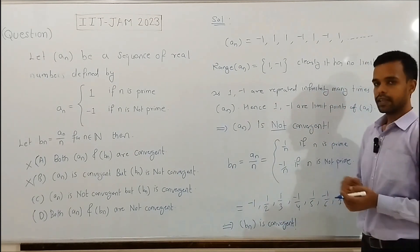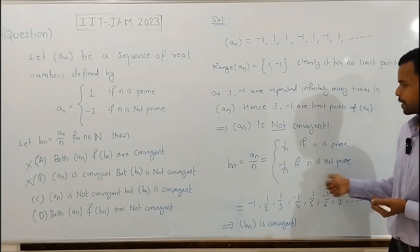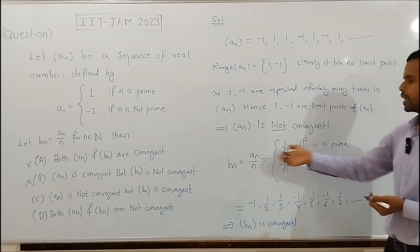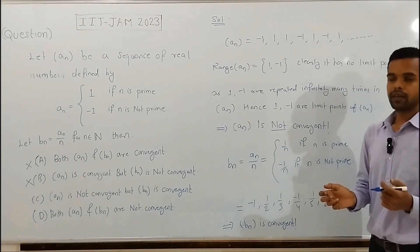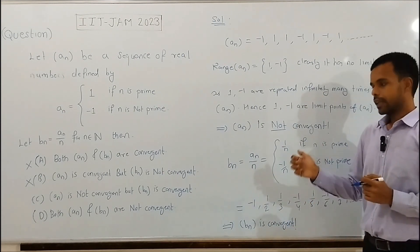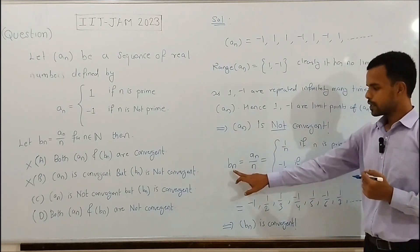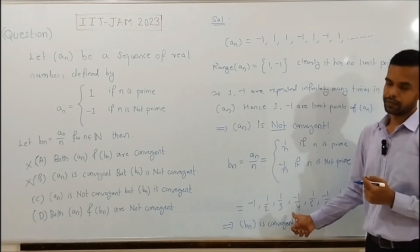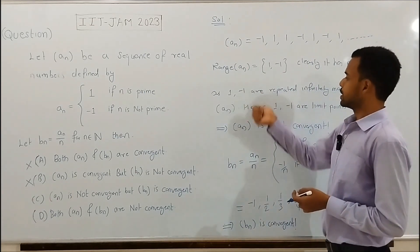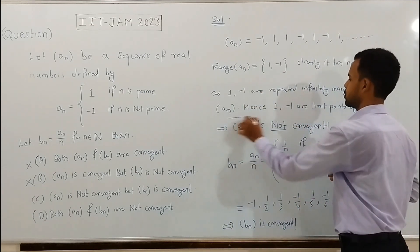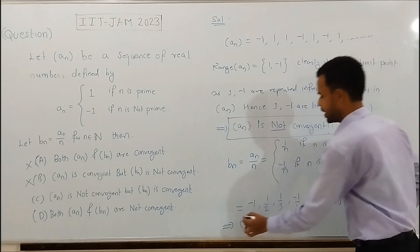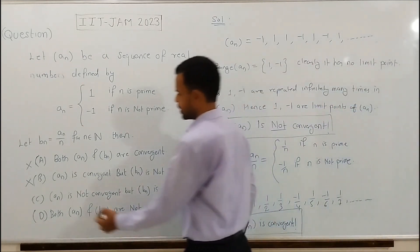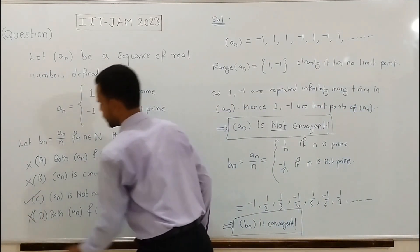Another way to see this: each and every subsequence of bn converges to 0, hence sequence bn converges to 0. This is another method to confirm that sequence bn is convergent. So, sequence an is not convergent and sequence bn is convergent. Thus, option c is true and option d is false.